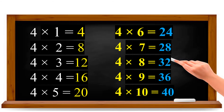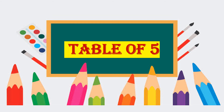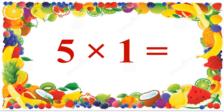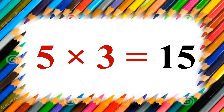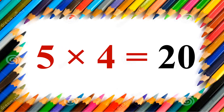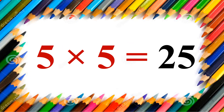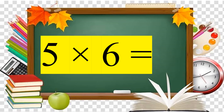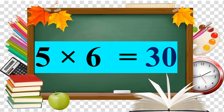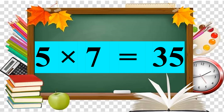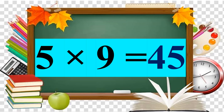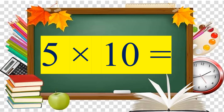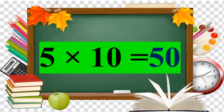Yes, now we are going to see the table of 5. 5 ones are 5. 5 twos are 10. 5 threes are 15. 5 fours are 20. 5 fives are 25. 5 sixes are 30. 5 sevens are 35. 5 eights are 40. 5 nines are 45. 5 tens are 50. Clear with the 5 table? Very easy table.